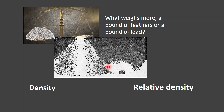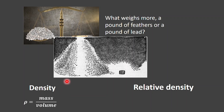You can easily have a pound of feathers — it just takes up a lot more volume than a pound of lead. Density, as you know from earlier science classes, is simply mass divided by volume. You need a lot more volume of feathers to yield the same mass as a much smaller volume of lead.